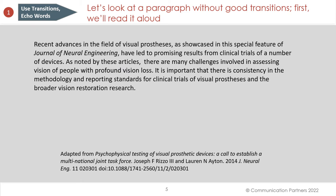Let's look at a paragraph without good transitions. Recent advances in the field of visual prosthesis, as showcased in this special feature of the Journal of Neural Engineering, have led to promising results from clinical trials of a number of devices. As noted by these articles, there are many challenges involved in assessing vision of people with profound vision loss. It is important that there is consistency in the methodology and reporting standards for clinical trials of visual prosthesis and the broader vision restoration research. This paragraph is fine grammatically, but it's missing transitions to establish the relationships between sentences.